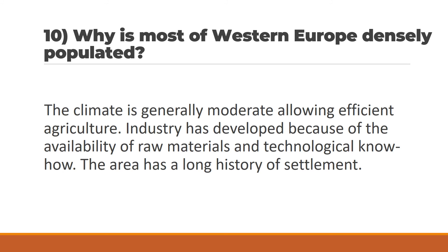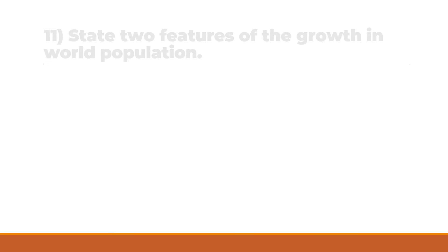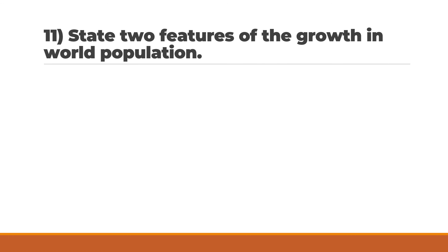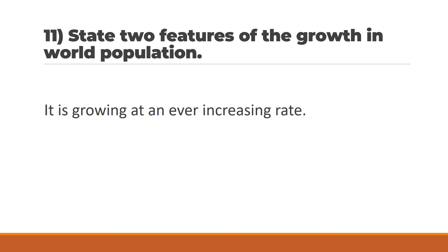The climate is generally moderate, allowing efficient agriculture. Industry has developed because of the availability of raw materials and technological know-how. The area has a long history of settlement and development. Question 11: State two features of the growth in world population. Answer: It is growing at an ever-increasing rate.